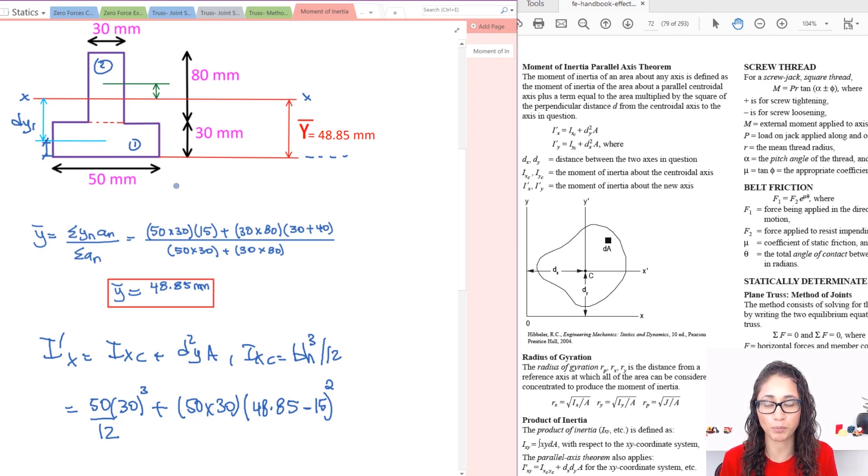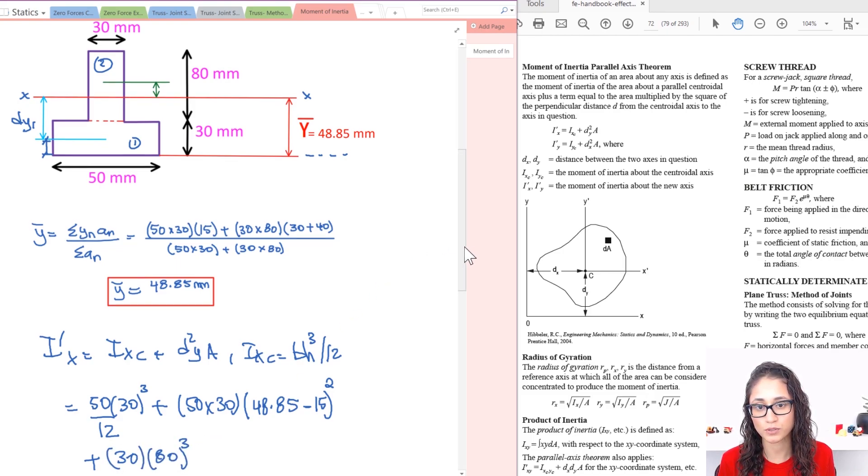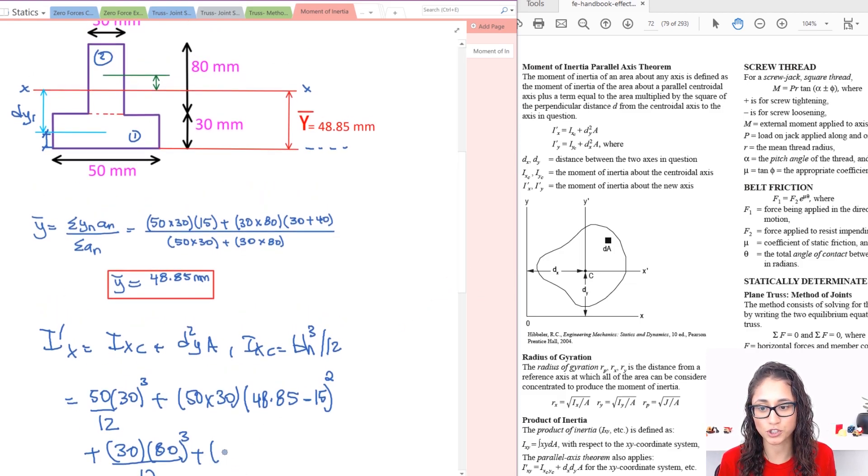Now I need to do for the second part. So plus I have again rectangular, so it's going to be bh cubed over 12. Now b here is 30, h is 80. This is cubed over 12. Then I have the area which is 80 times 30.